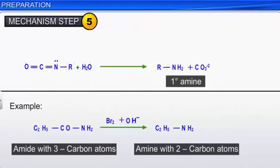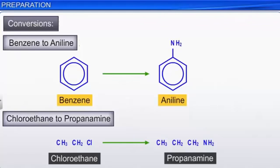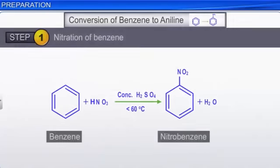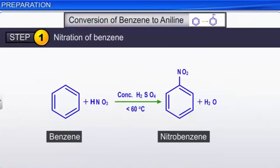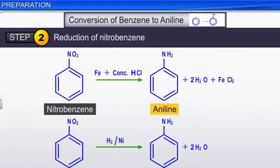The last step is the hydrolysis of alkyl isocyanate to yield a primary amine with one carbon atom less than the parent amide. With this knowledge of preparation methods for amines, let us now carry out some conversions: benzene to aniline, and chloroethane to propanamine. In the conversion of benzene to aniline, the first step involves nitration of benzene using a nitration mixture to give nitrobenzene. The nitrobenzene is then reduced to aniline in the presence of iron and concentrated hydrochloric acid or by catalytic reduction.